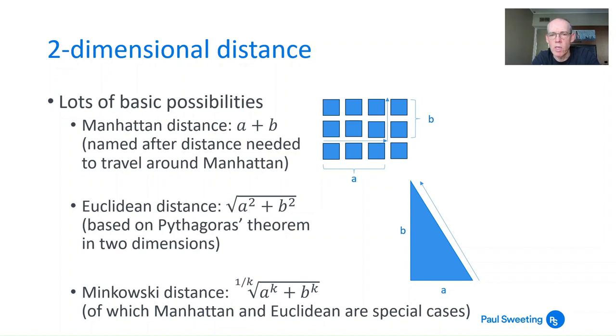The Euclidean distance—if instead of being a person you are a bird or a helicopter pilot and you don't need to worry about the buildings in the way—then you can use Euclidean distance, which is just the square root of a squared plus b squared. This is based on or equivalent to Pythagoras' theorem in two dimensions, and you can see here we have a triangle. If your two sides are a and b, then the hypotenuse is clearly defined by the square root of a squared plus b squared. More generally, there is something called Minkowski distance, which in two dimensions is the kth root of a to the k plus b to the k.